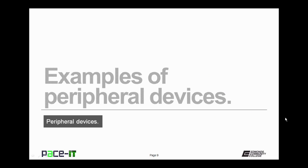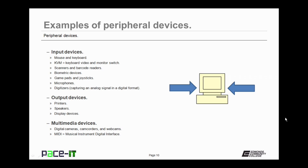Now, let's move on to some examples of peripheral devices. There are input devices: keyboards and mice, the KVM — which is a keyboard, video, and monitor switch — scanners and barcode readers, biometric devices, game pads and joysticks, microphones, and digitizers, which are used for capturing an analog signal in a digital format. Then there are output devices, like speakers, printers, and display devices.